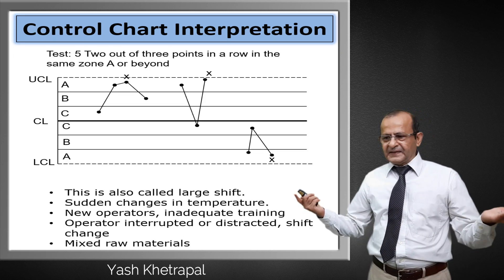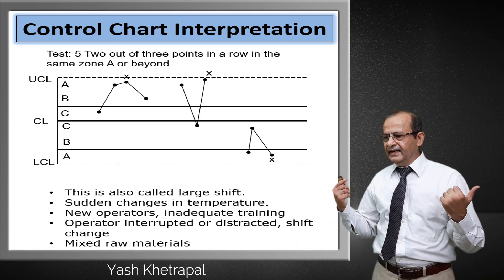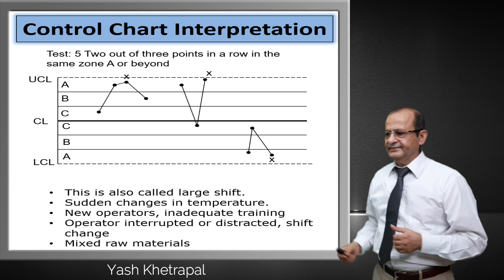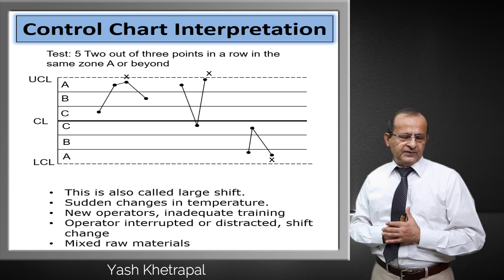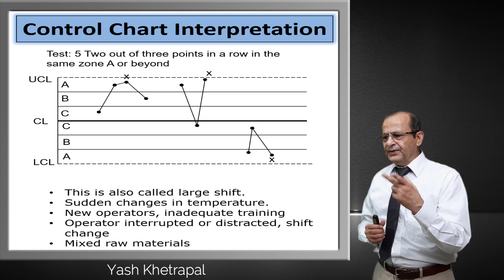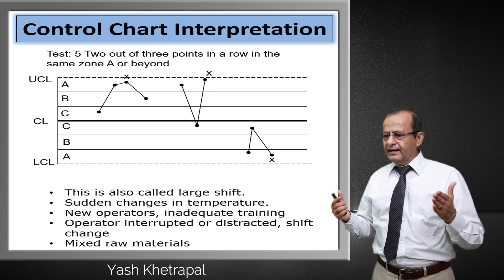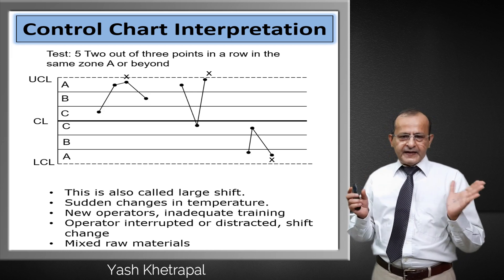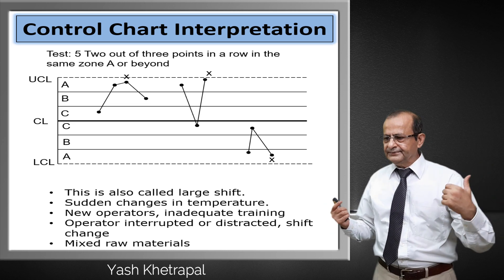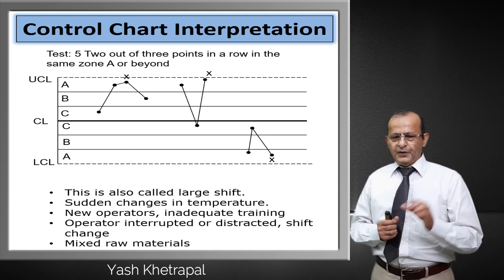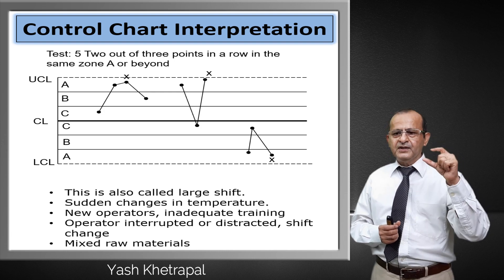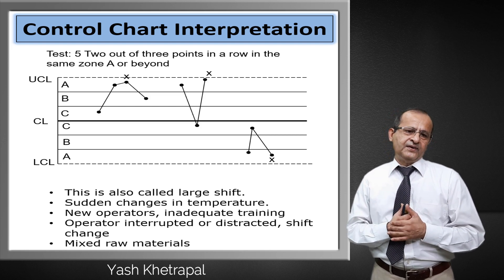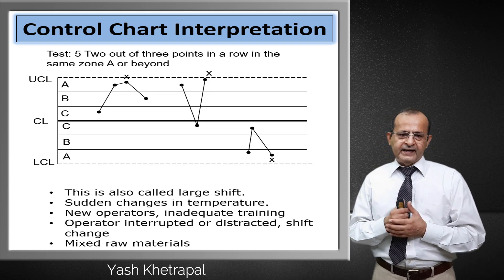Rule 5: 2 out of 3 consecutive points in Zone A. This itself means a large shift. Could be because of a sudden change in temperature, a new operator, inadequate training, or at the time of shift change where the operator is not careful. It could also be due to mixing in raw materials, impacting dimensional quality.